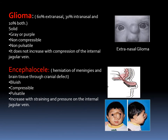Another congenital external nose deformity is glioma: 60% extransal, 30% intranasal, and 10% both. It is solid, gray or purple, non-compressible, non-pulsatile, and does not increase with compression of the internal jugular vein. Compare this to encephalocele, which is herniation of meninges and brain tissue through a cranial defect. Encephalocele is bluish, compressible, pulsatile, and increases with straining and pressure on the internal jugular vein.